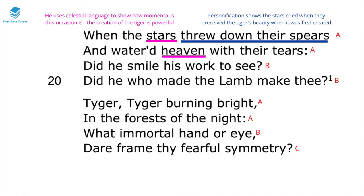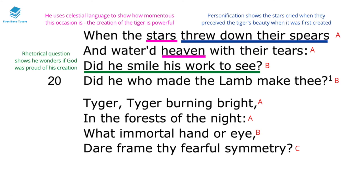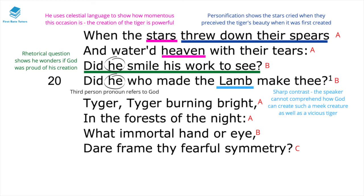The stars are personified — personification here shows that the stars cried when they perceived the tiger's beauty once it was first created. The rhetorical question 'did he smile his work to see?' shows the speaker wondering if God was proud of his creation. The repetition of the pronoun 'he' is a direct reference to God. The speaker mentions the lamb as a sharp contrast — unable to comprehend how God can create such a meek and peaceful creature as well as such a vicious tiger.